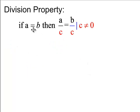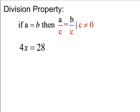Division property. If you have an equality, you can divide both sides by the same thing and maintain an equality, except we must remember that you're never allowed to divide by 0. So C can't be 0. So if we start out with 4x is equal to 28, if we divide both sides by 4, then you can find out that x is 7.